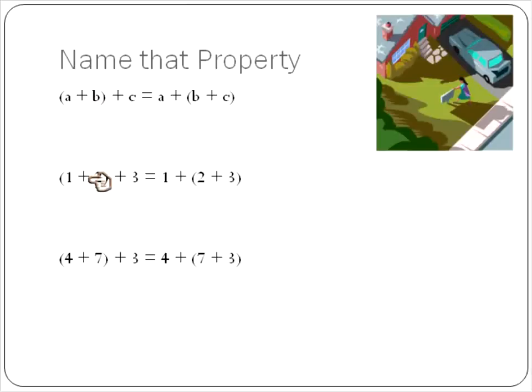In other words, 1 plus 2 plus 3 is the same as saying 1 plus 2 plus 3. Or 4 plus 7 plus 3 is the same as saying 4 plus 7 plus 3. This actually, this one here, is a little bit more practical because when you're adding three numbers in a row, maybe you'd add the ones that add up to a 10.